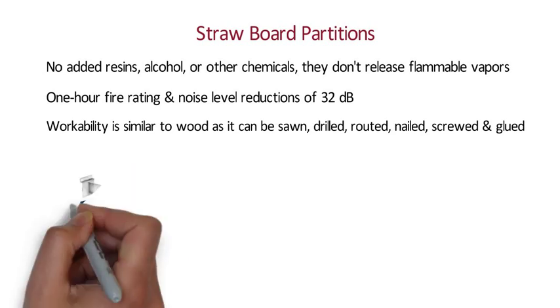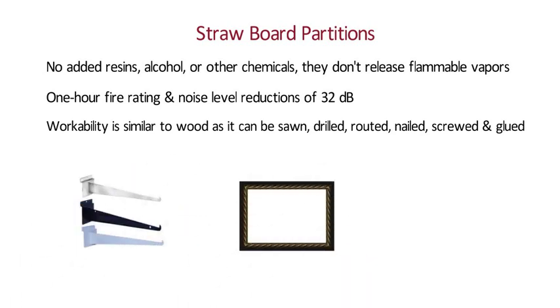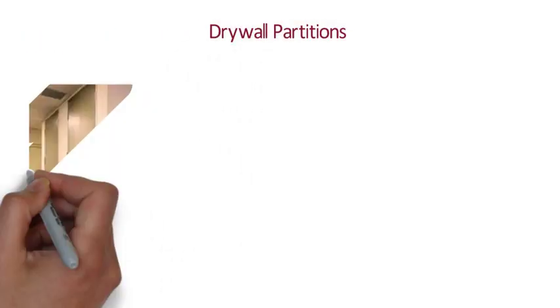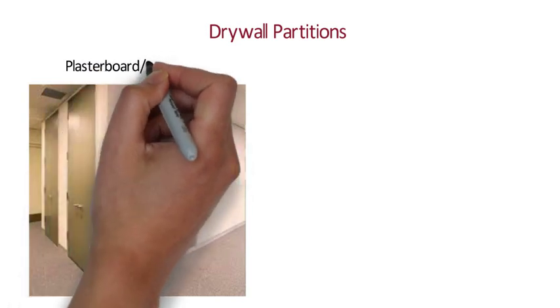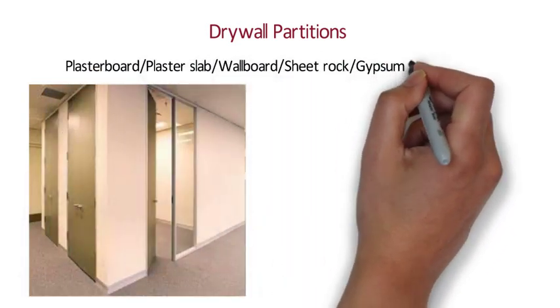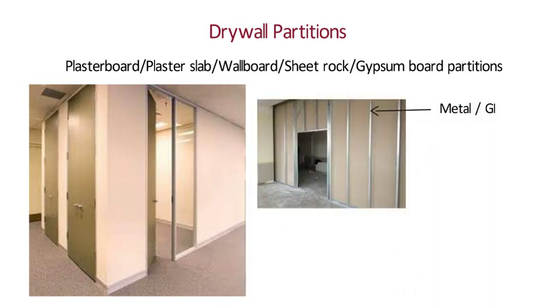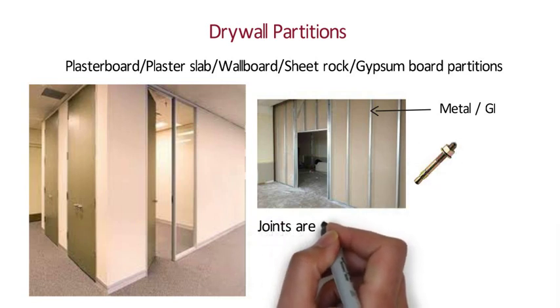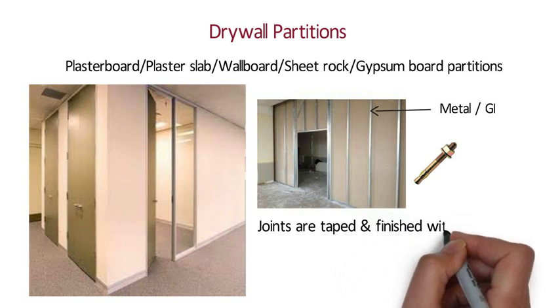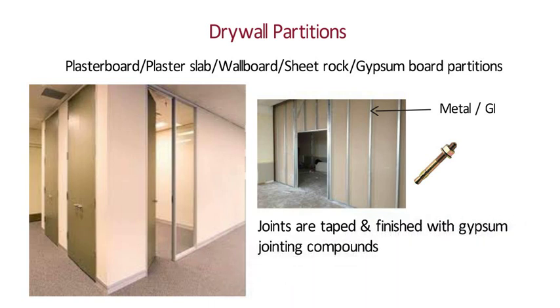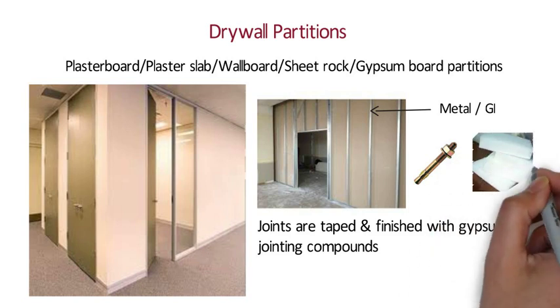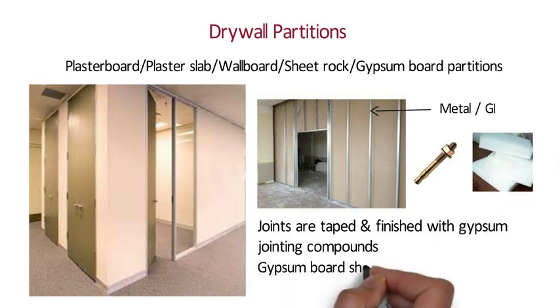Lightweight wall attachments such as shelf brackets, picture frames, mirrors and towel bars can be attached directly to the panel. Drywall Partitions: Also known as plasterboard, plaster slab, wall board, sheet rock or gypsum board partitions. The framework can be aluminium or GI, fixed to false ceiling and false floor with anchor fasteners. The joints are then taped and finished with gypsum jointing compounds. The gap between plasterboards is packed with one layer of thermally bonded polyester slab, and the gypsum board is screwed on frame and can be painted for final finish.